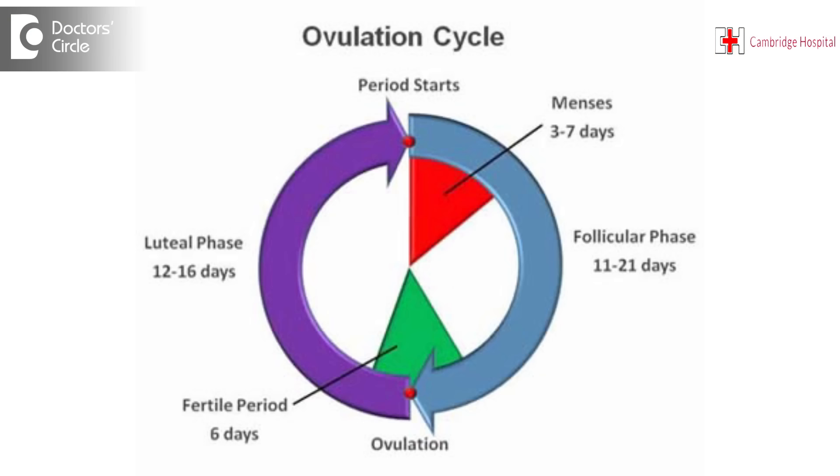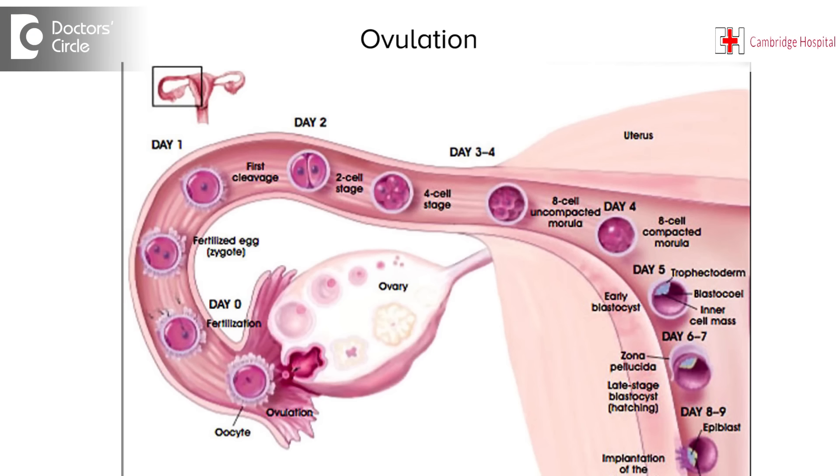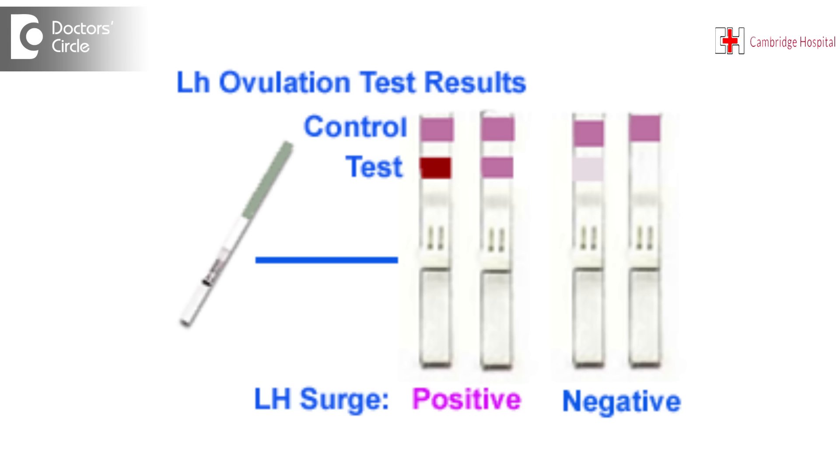Normally, in a normal cycle, when it is a very regular cycle which happens between 28 to 30 days, the ovulation occurs from the 11th day to the 21st day. In this case, if you have done the ovulation test only till the 16th day, then there are possibilities that you would have ovulated after the 16th day. So what I would advise is continue to do the ovulation test up to the 20th day.